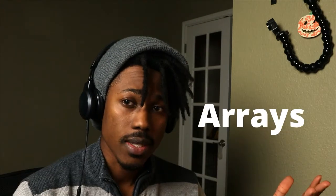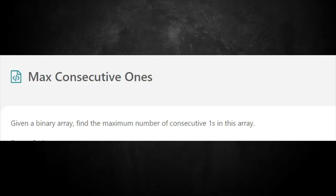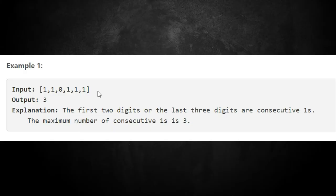Let's get into the first problem of this series: Maximum Consecutive Ones. Let's read the prompt — given a binary array, find the maximum number of consecutive ones in this array. The first example input has only ones and zeros. You have two ones, then a zero, then three ones, and the output should be three. Note that the array is binary, containing only zeros and ones, and the length won't exceed 10,000.